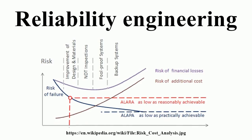The objectives of reliability engineering, in order of priority, are: to apply engineering knowledge and specialist techniques to prevent or reduce the likelihood or frequency of failures; to identify and correct the causes of failures that do occur despite efforts to prevent them; to determine ways of coping with failures if their causes have not been corrected; to apply methods for estimating the likely reliability of new designs; and for analyzing reliability data. This priority ordering is by far the most effective way of working, in terms of minimizing costs and generating reliable products.